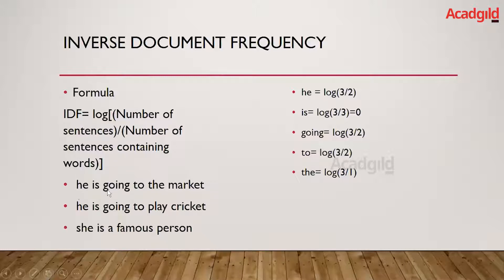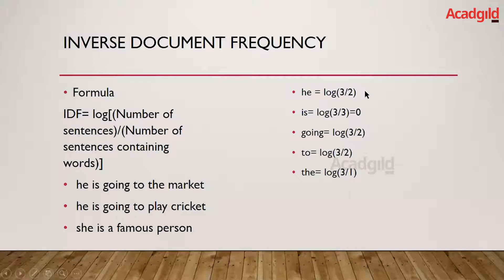Consider the first word 'he'. It is present in the first sentence and second sentence, but not in the third. So the number of sentences containing the word is two. The number of sentences total is three, so we write log(3/2), which gives a value somewhere between zero and one.